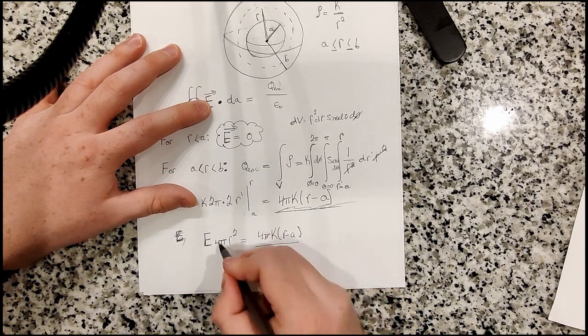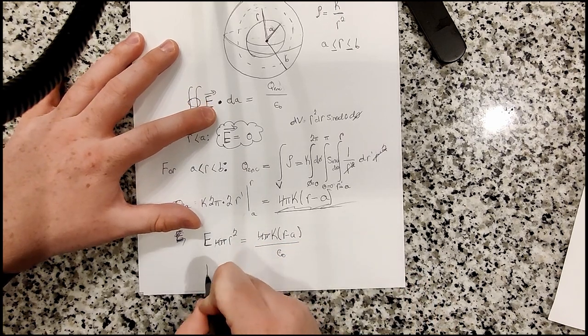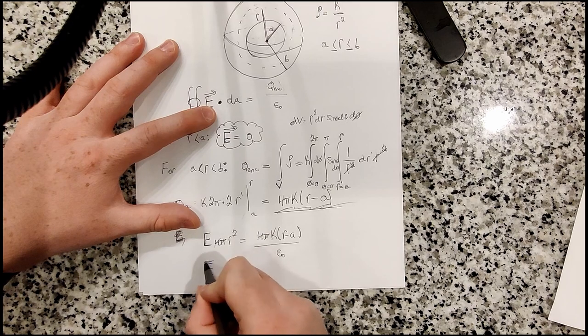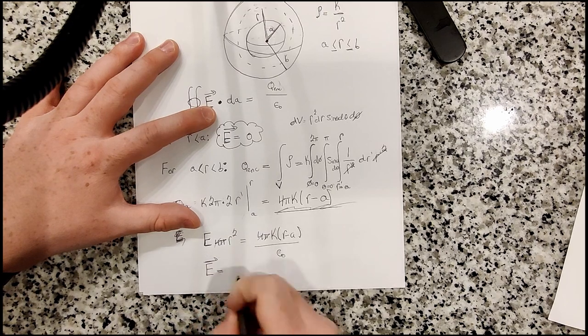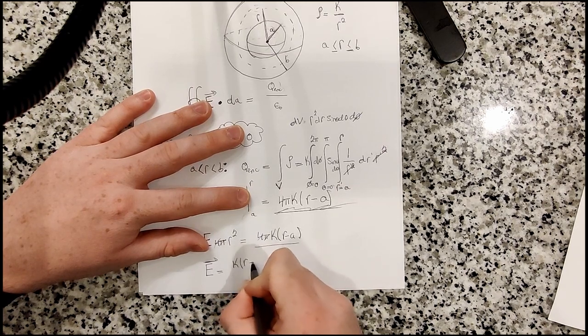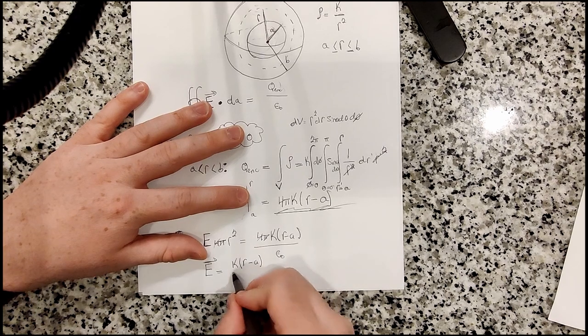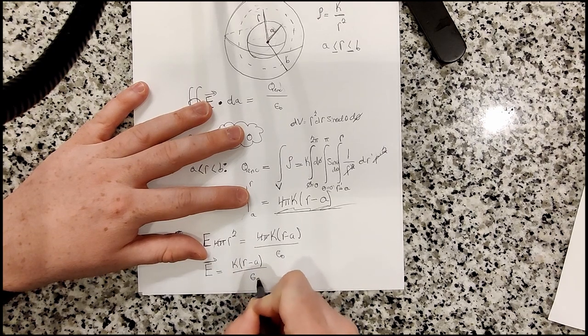We're going to have 4 pi r squared equal to 4 pi k times r minus a over epsilon naught. And so the pi cancels, the 4 cancels. And so we find that the electric field will be equal to k times r minus a over epsilon naught.